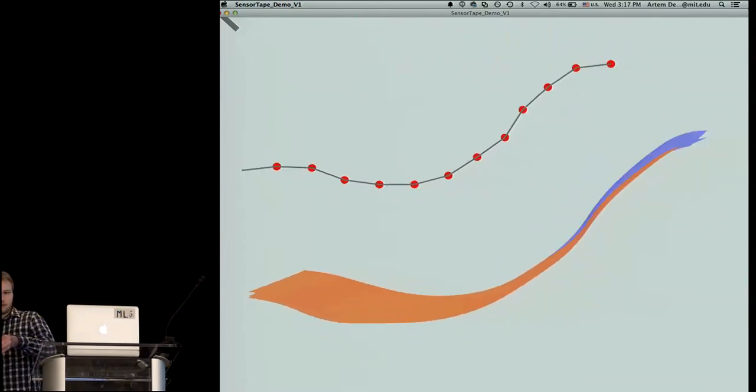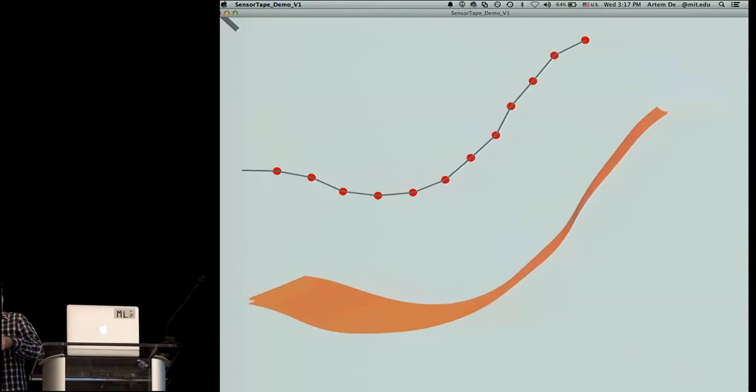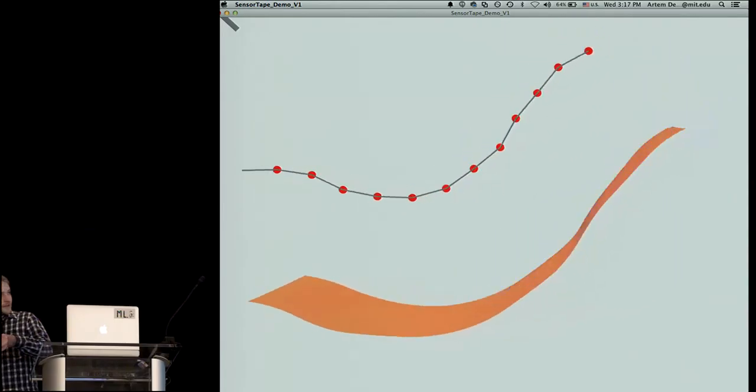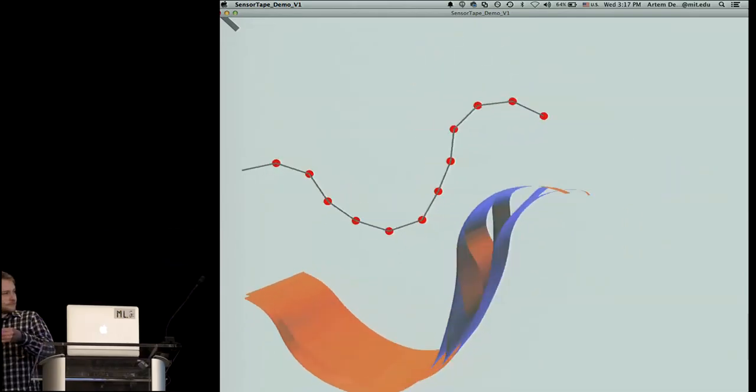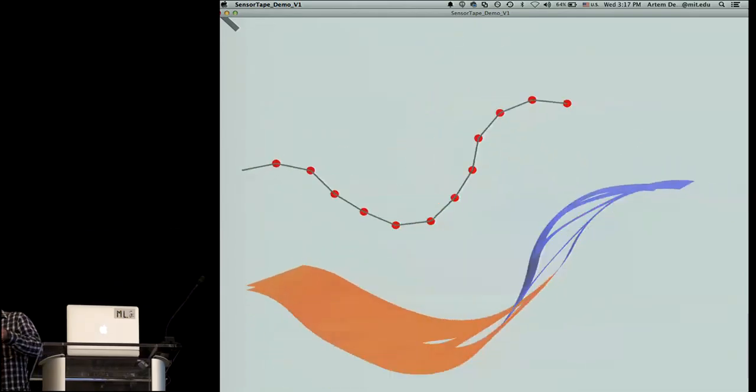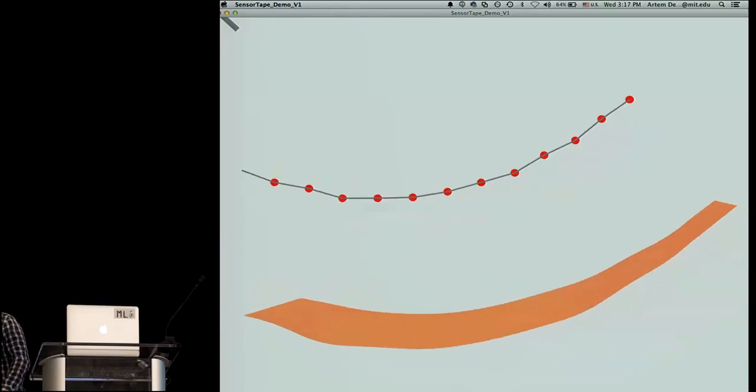I can twist it, and then you can get the bending, as well as twisting. And this is using IMU sensors, so I'll put it down.